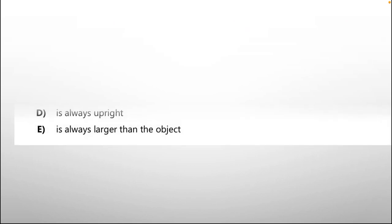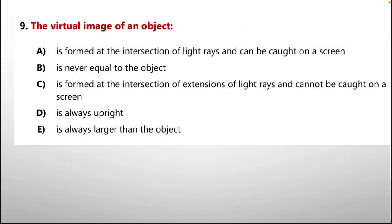Question number 9: the virtual image of an object — option A: is formed at the intersection of light rays and can be caught on a screen. B: is never equal to the object. C: is formed at the intersection of extensions of light rays and cannot be caught on a screen. D: is always upright. E: is always larger than the object.